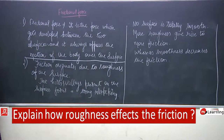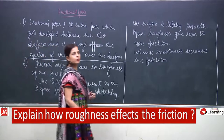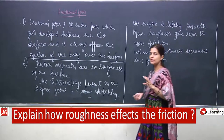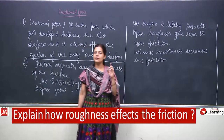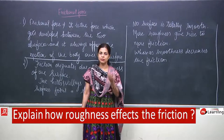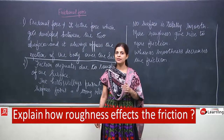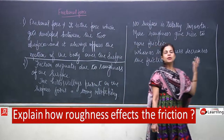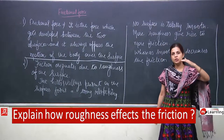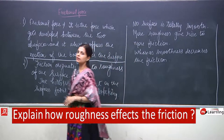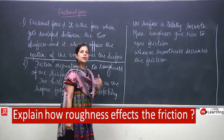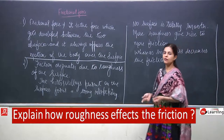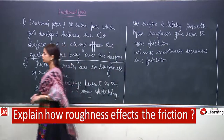Friction originates due to the roughness of the substance. The hills and valleys on surface 1 interlock with the hills and valleys of surface 2, making it difficult to overcome friction. This friction will reduce only when the applied force becomes more than the frictional force — that interlocking has to be broken.